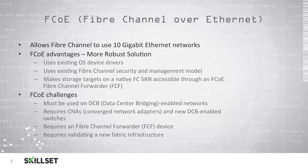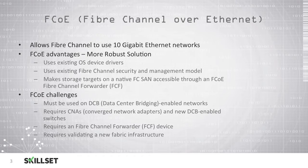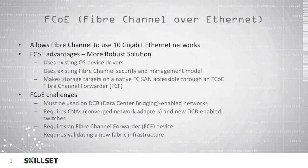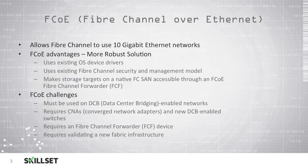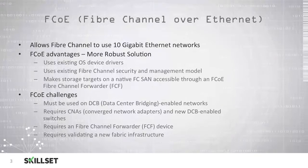Fiber Channel over Ethernet, or FCoE, allows Fiber Channel traffic to be transmitted on 10 gigabit Ethernet networks. There are several advantages of Fiber Channel over Ethernet. It is a very robust solution that can use your existing operating system drivers, your existing Fiber Channel security and management model, as well as making your storage targets available on a native Fiber Channel SAN through a Fiber Channel over Ethernet forwarder, or FCF.